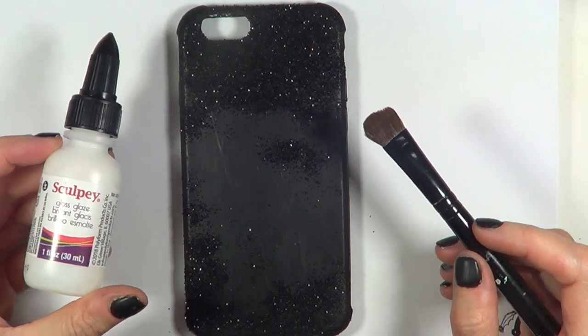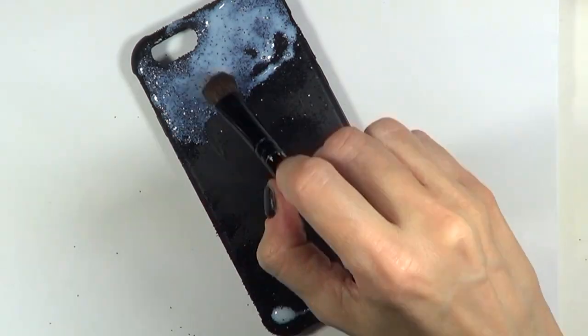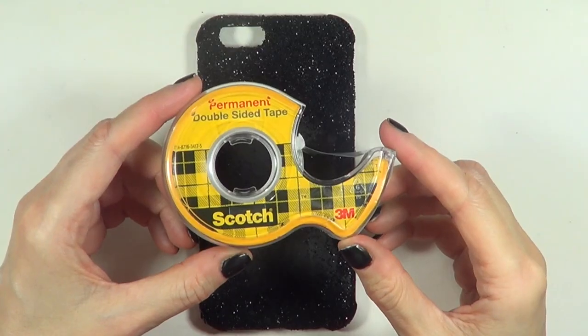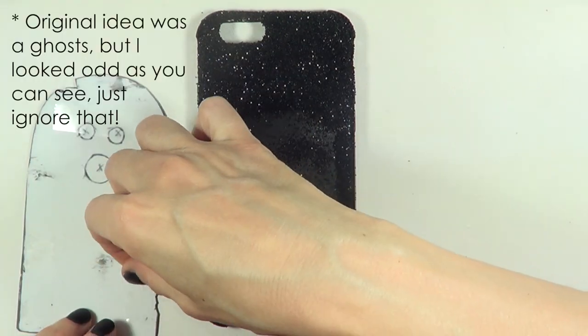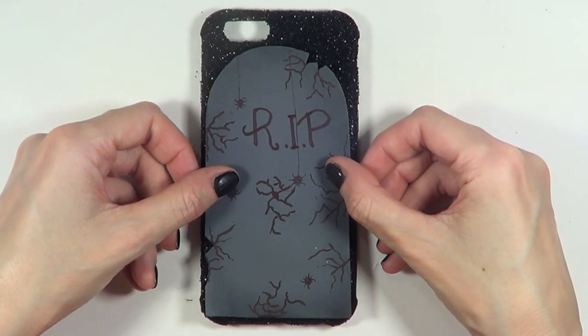Then I'm going to be adding some gloss. I'm using Mod Podge to seal the glitter so it doesn't fall. I'm going to be using some double-sided tape to place my tombstone on top of my phone case.